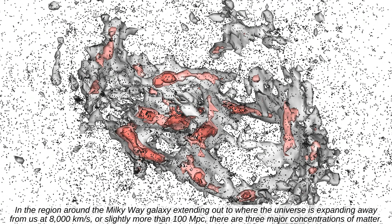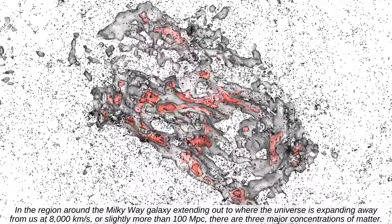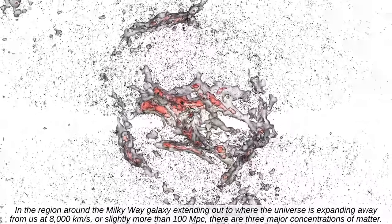In the region around the Milky Way galaxy, extending out to where the universe is expanding away from us at 8,000 kilometers per second, or slightly more than 100 megaparsecs, there are three major concentrations of matter.